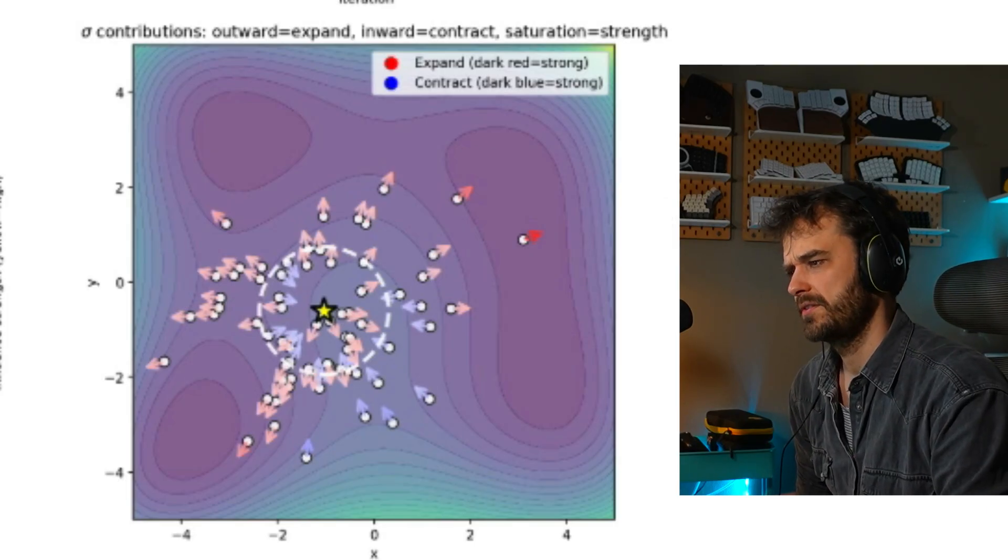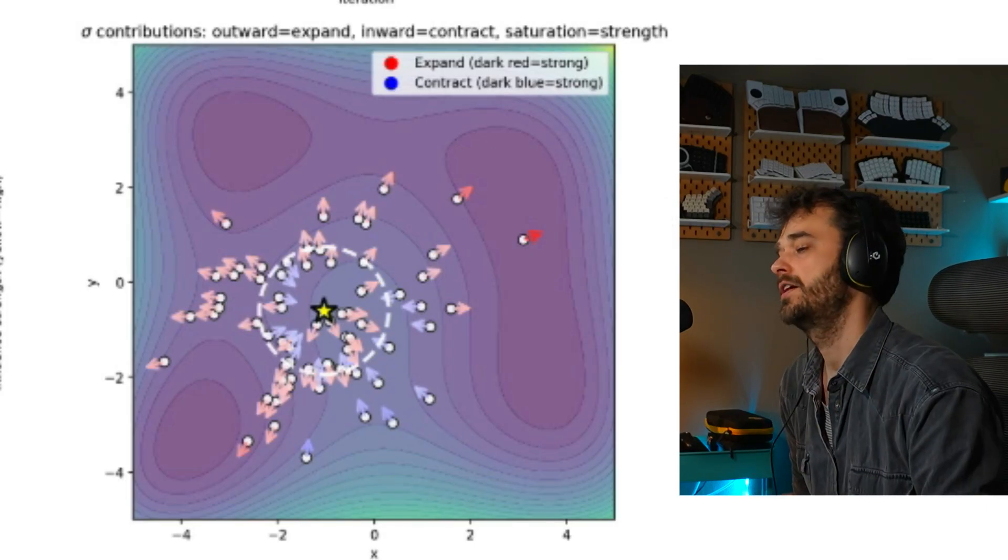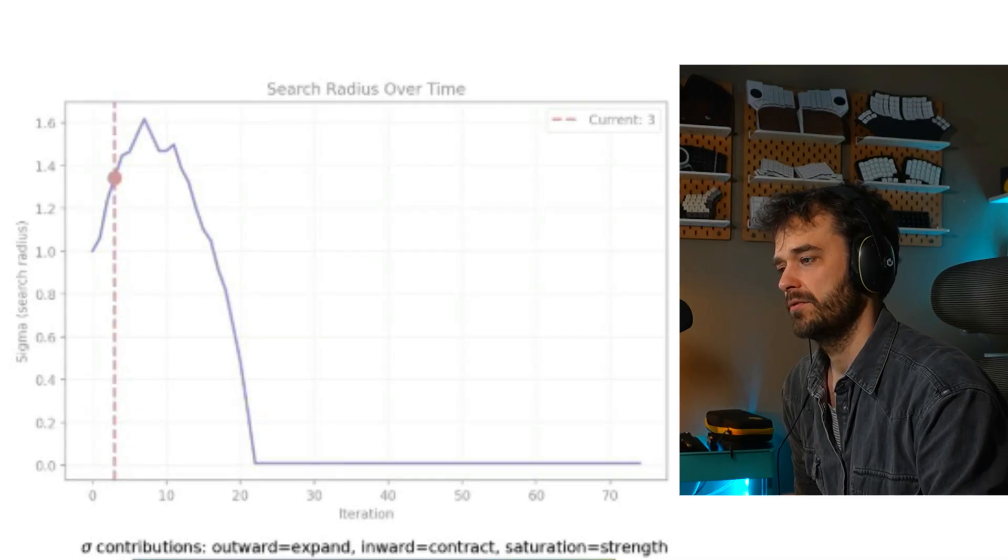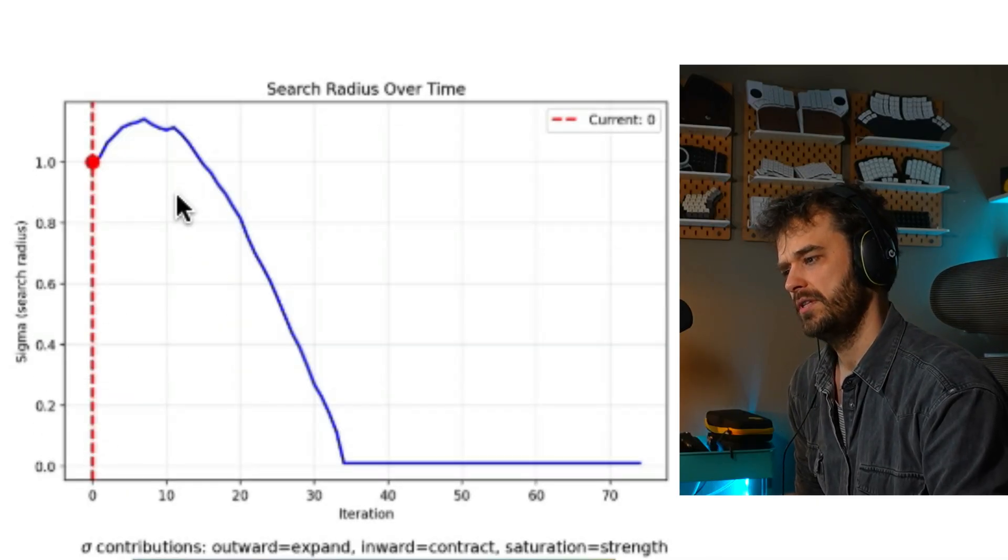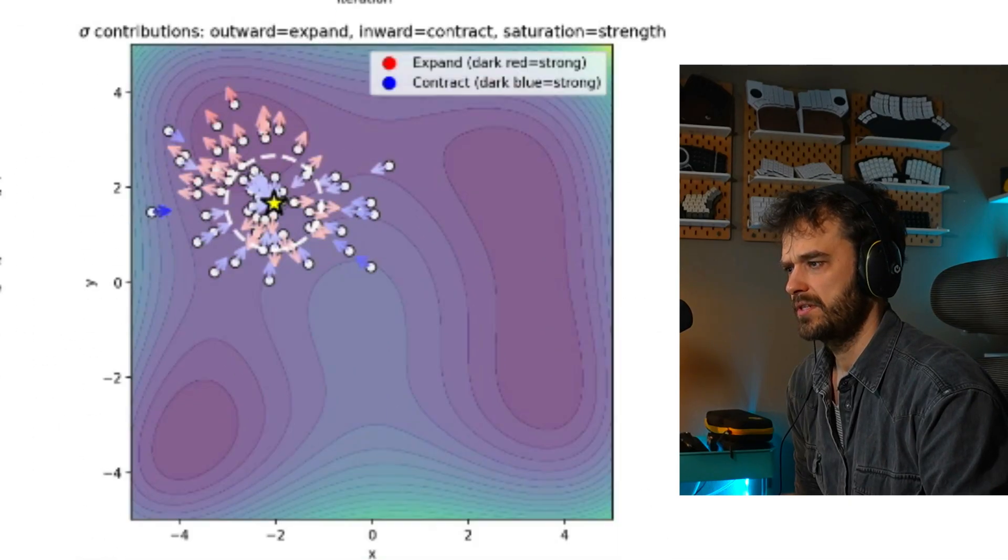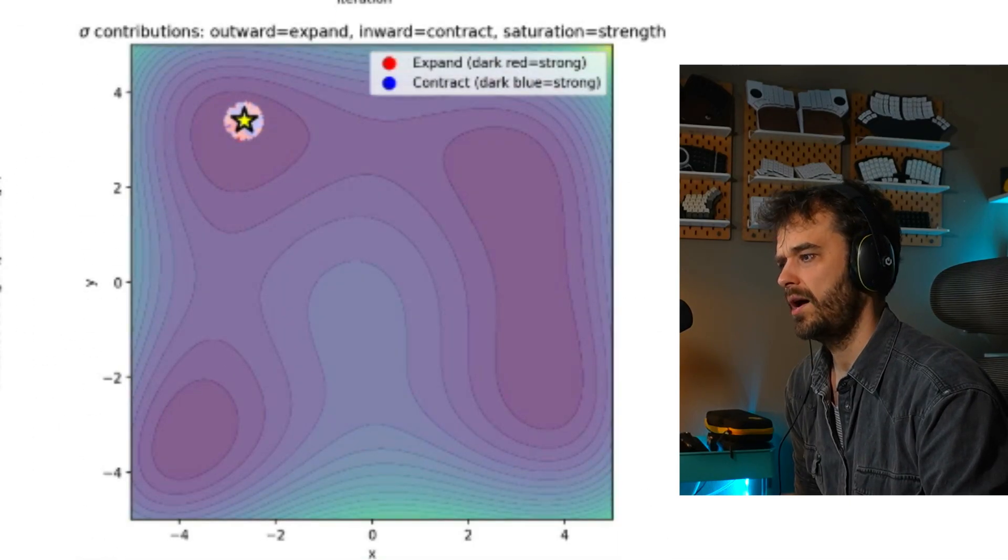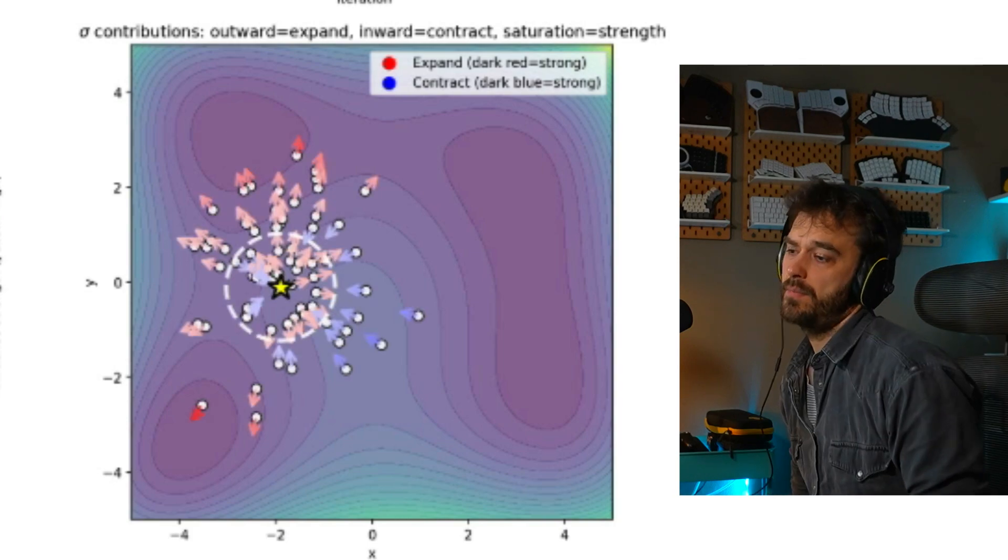And a final thing that could be interesting is we do have a learning rate for that sigma value. And we could set that learning rate to be quite small. And you can see that when we do that, it becomes a bit more smooth on this chart over here. And if I were to go through some iterations, we still end up in the local optima. We just take a slightly different path. But there you go.